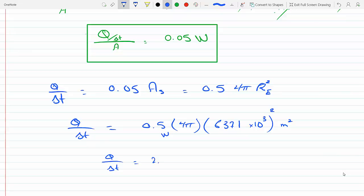And so we get 2.55 times 10 to the 13 watts. So this seems very large, that we are losing this much heat by conduction out of the earth's surface.